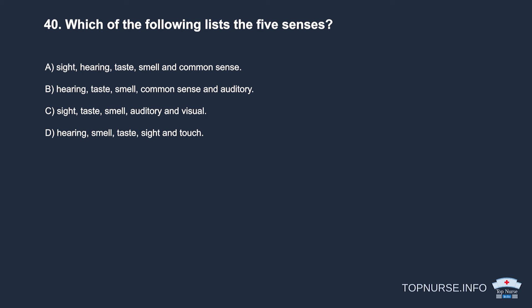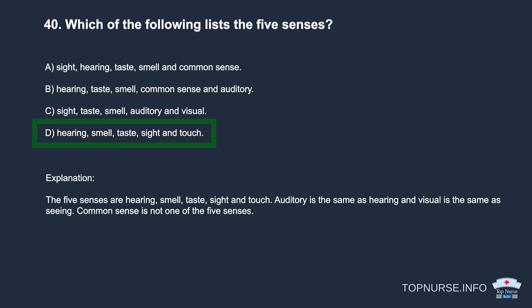Question 40: Which lists the five senses? a. Sight, hearing, taste, smell, and common sense. b. Hearing, taste, smell, common sense, and auditory. c. Sight, taste, smell, auditory, and visual. d. Hearing, smell, taste, sight, and touch. Correct answer: d. Hearing, smell, taste, sight, and touch. Auditory is the same as hearing, and visual is the same as seeing. Common sense is not one of the five senses.